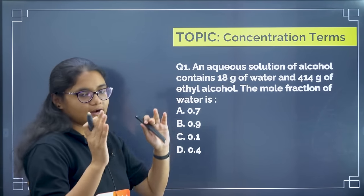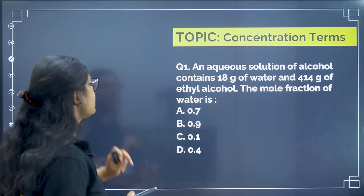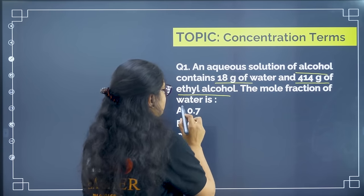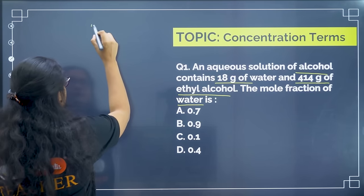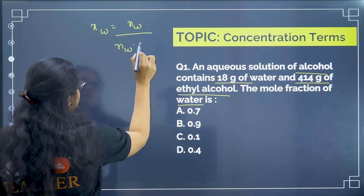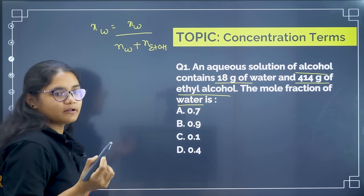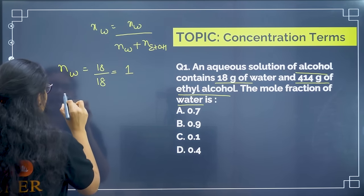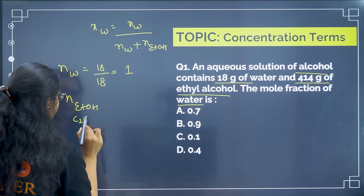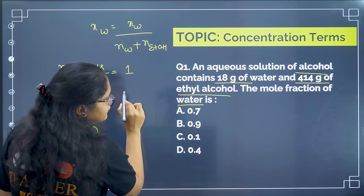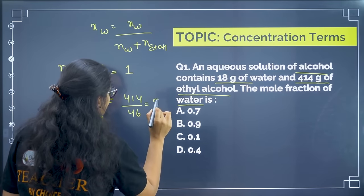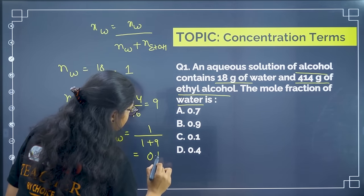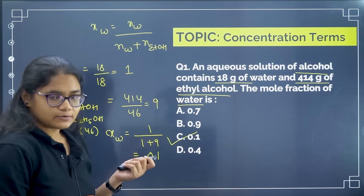The first question is from concentration terms. An aqueous solution of alcohol contains 18 grams of water and 414 grams of ethyl alcohol — find the mole fraction of water. This is a direct formula-based question. Mole fraction of water equals moles of water divided by moles of water plus moles of ethyl alcohol. Moles of water: 18/18 = 1. Moles of ethyl alcohol (C₂H₅OH, molar mass 46): 414/46 = 9. So x(water) = 1/(1+9) = 0.1. Correct answer is option C.